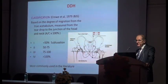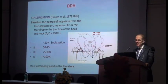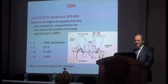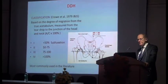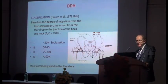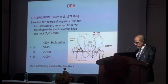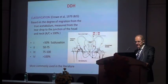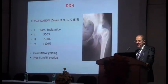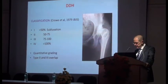There are several classifications. Classifications are useful for writing papers but also for understanding treatment — if you can divide a patient group up into what treatment regime you offer in each different group, they're very helpful. Crowe is very popular for writing papers but it's not particularly helpful for deciding what to do. It's defined by the distance that the head is out of the true acetabulum. Type 1 is less than 50%, type 2 is 50 to 75%, type 3 is 75 to 100%, and high dislocation is greater than 100%. The type 2 and 3 overlap and are the ones who provide the most difficult challenges in reconstruction.